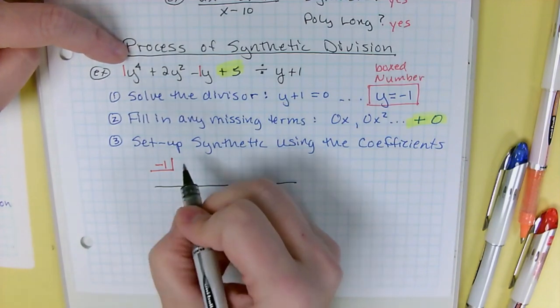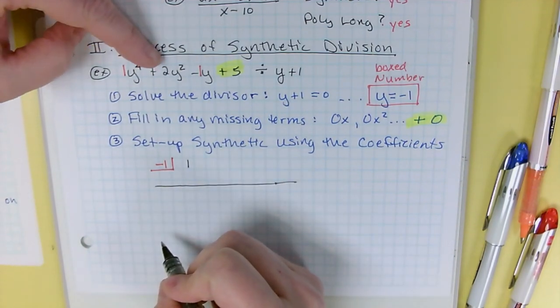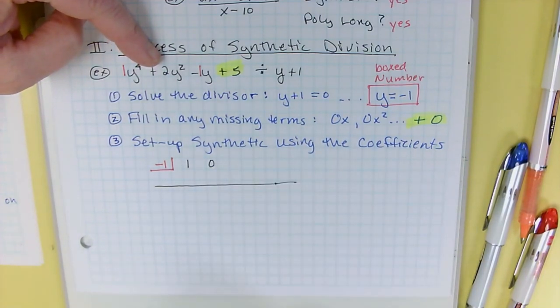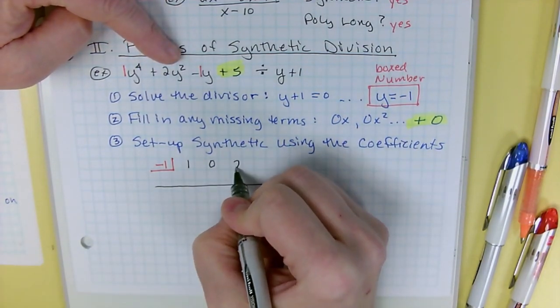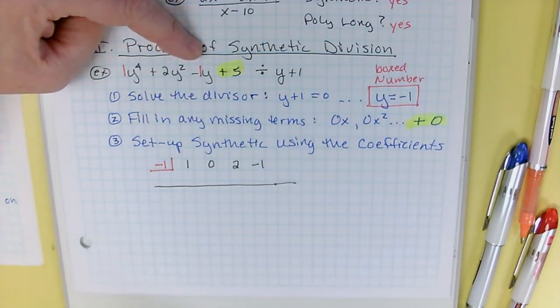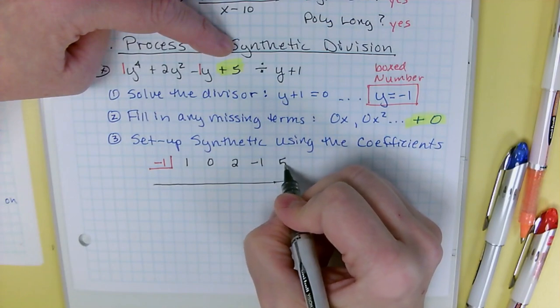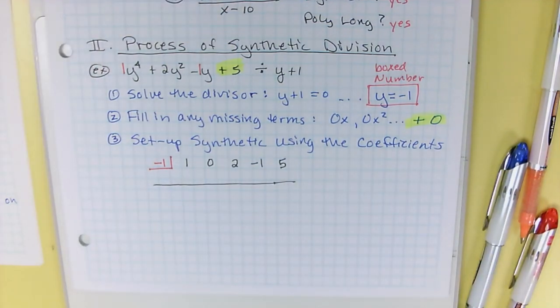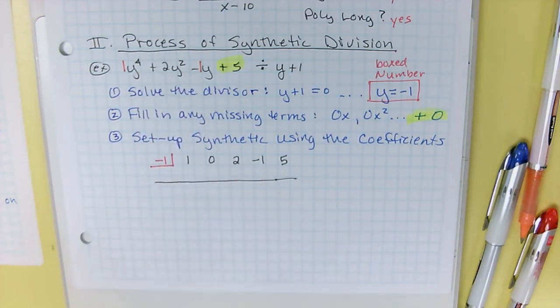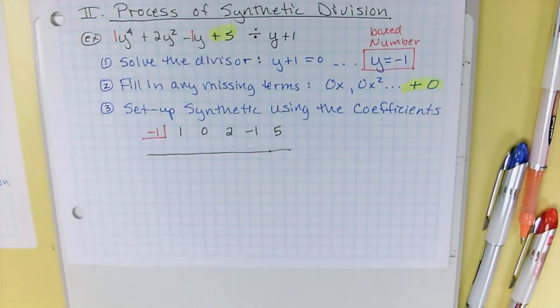So for the y⁴, we put a one. For the missing y³, we put a zero. That's our filler. For the y², the coefficient is two. For the y, the coefficient is negative one. And for the numerical term, it is its own coefficient. So we just put the five. So what's the same about poly long and synthetic is in both cases, the function you have to fill with a zero term, regardless of which type of division you're doing.